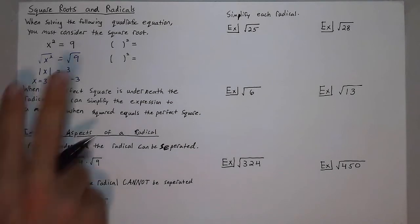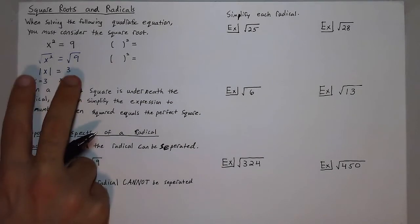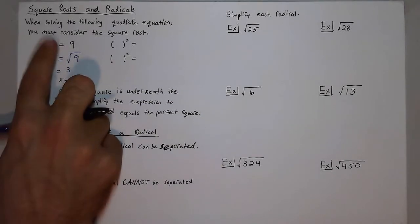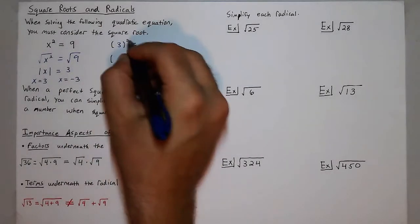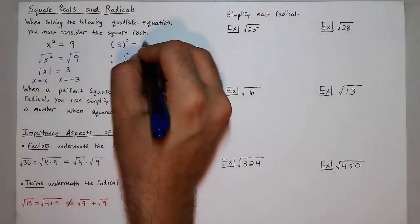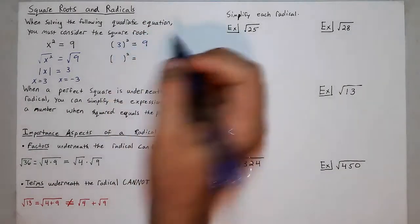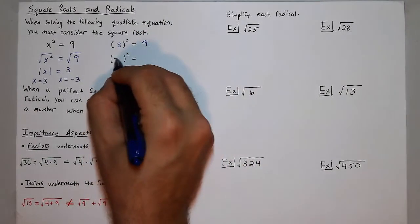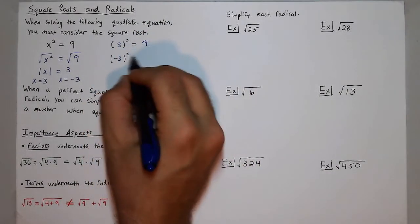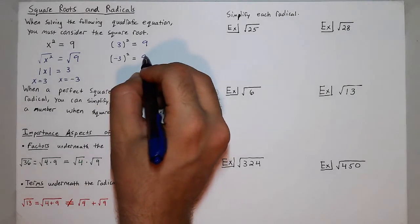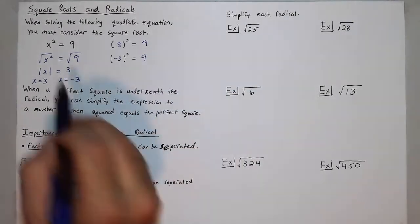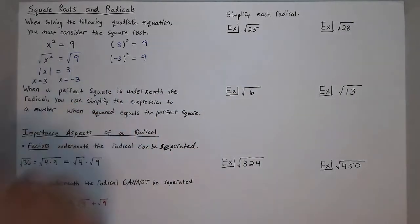There are two possible solutions for that equation because 3 squared is 9 and negative 3 squared is positive 9 as well. So there are two solutions to that equation.